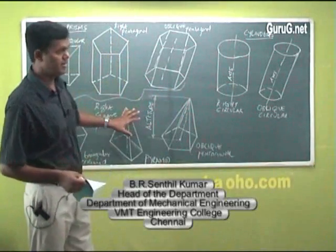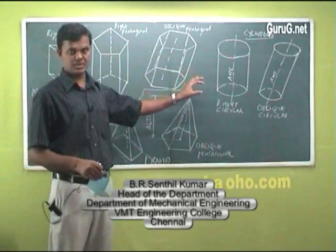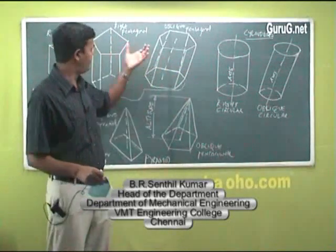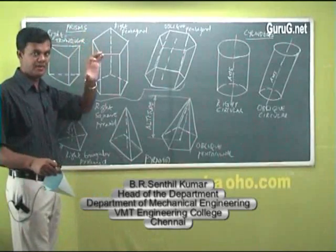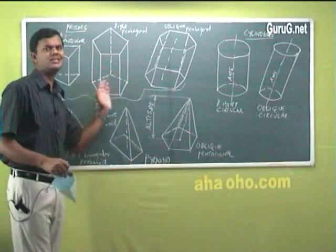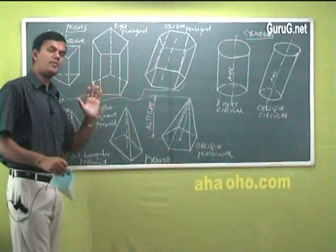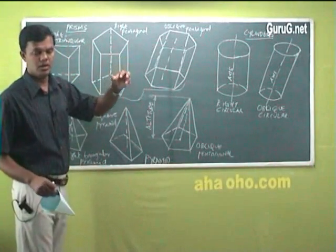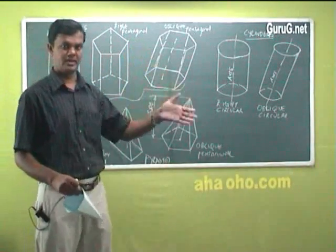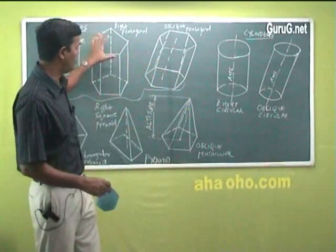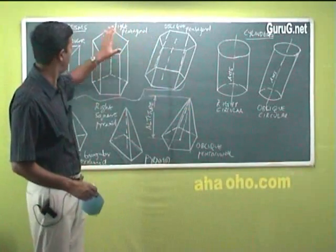So these sketches are very important because based on this, most of your questions will appear. If you know what is a prism perfectly—I have just drawn only three sketches, but you may have all the polygons: triangle, rectangle, pentagon, hexagon. If both sides, top and base are same, it will become prism.